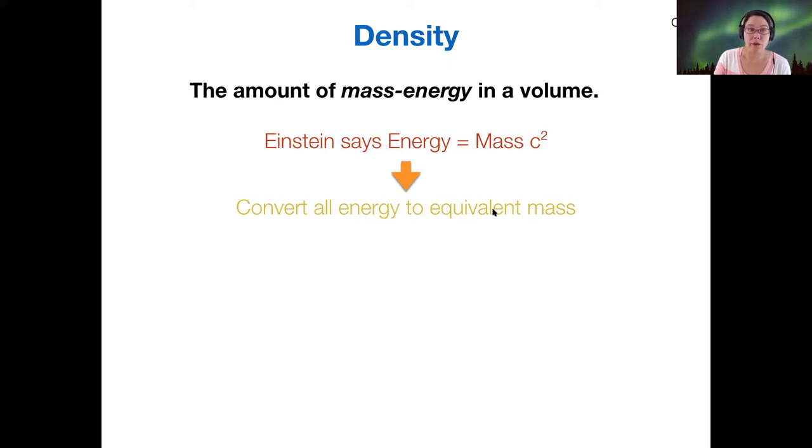And once we have the equivalent mass of everything in the universe, then we divide that by the entire volume of the whole universe. And that gives us the overall density. So when we talk about density for the universe, we're talking about mass plus energy density.